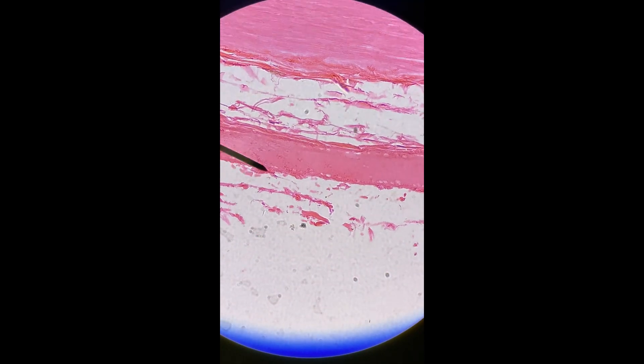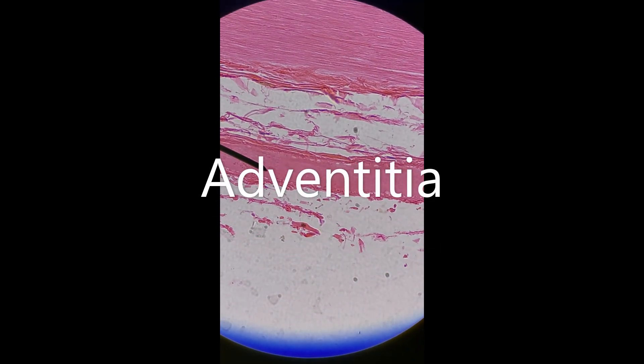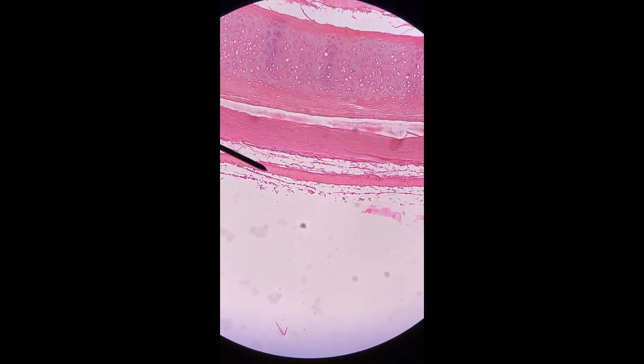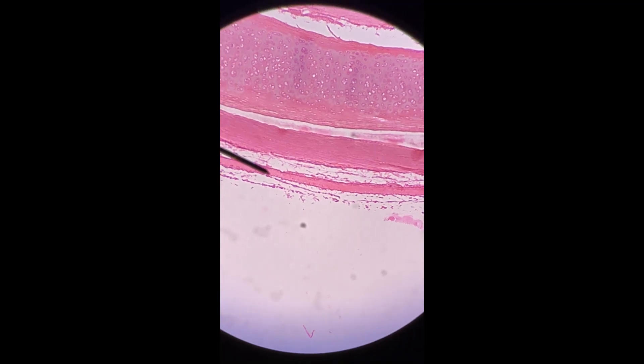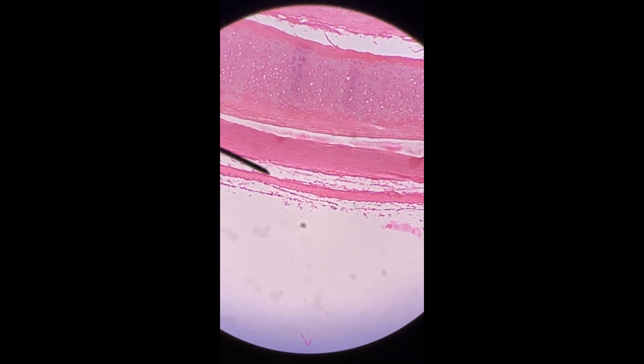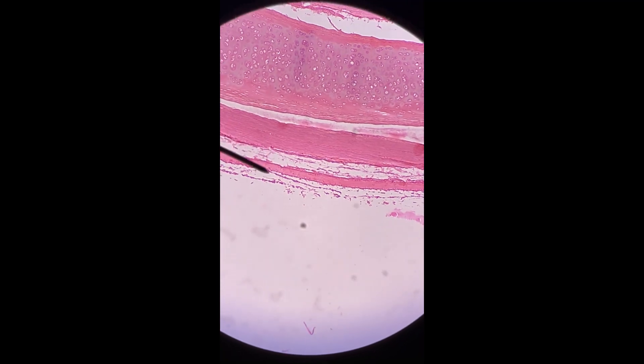Then the outer layer is the adventitia, the outer tunic, and that's out here where the pointer is. It includes all this other stuff - all this fat and some other fibers, connective tissue.